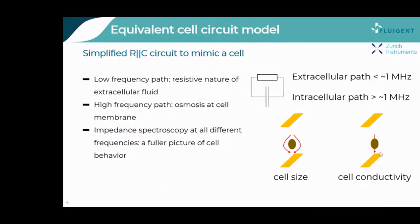So why are the electrical properties so useful in cell research? For simplicity, we can consider a cell as a simplified RC parallel circuit with a cut-off frequency. At low frequencies, typically below 1 MHz, the AC current will preferably take the easier path through the resistance represented by the extracellular fluid. Measuring at this frequency range can give useful information on the size of the cell, as the larger the cell, the more current is blocked.